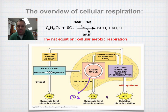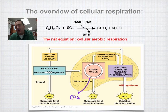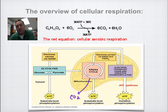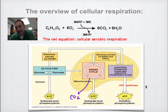The electron transport chain collects all of the high-energy electrons in the form of NADH and FADH2 from the previous two steps, and it's going to go through a process called oxidative phosphorylation. That means you're going to use oxygen to attach a phosphate, and that phosphate is going to be attached to ATP. You make most of those 36 ATP at this step — you get all your bang for the buck at the end, and that's when you use oxygen.